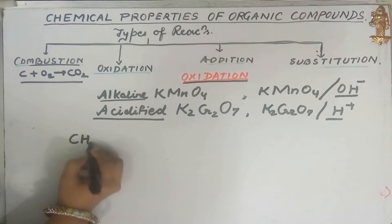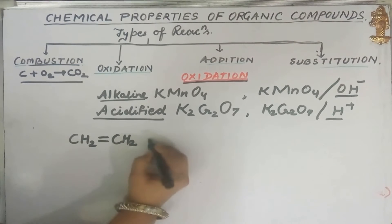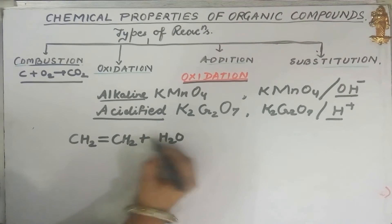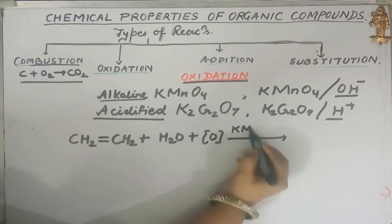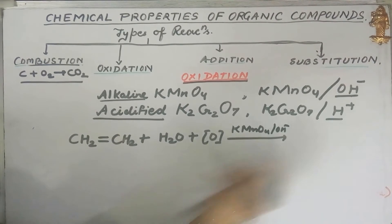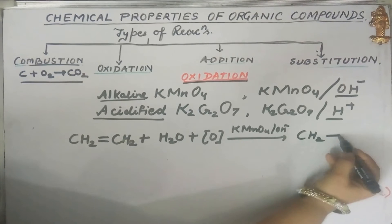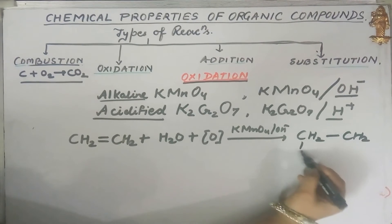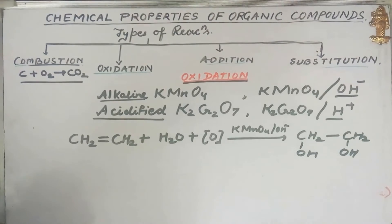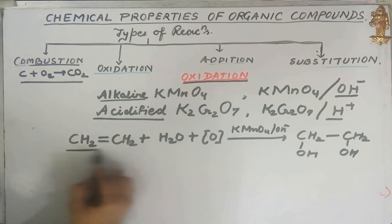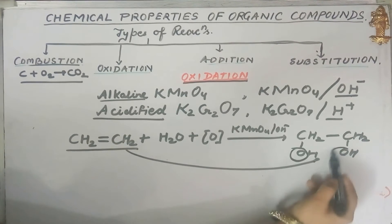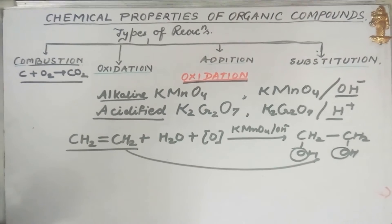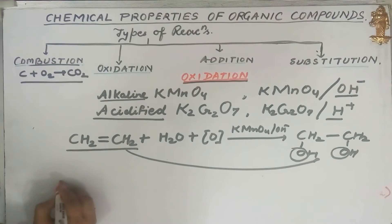The first important oxidation reaction is the oxidation of ethene in the presence of alkaline KMnO4, which gives ethylene glycol (CH2OH–CH2OH). Here one oxygen is added to the ethene, so this is called an oxidation reaction.